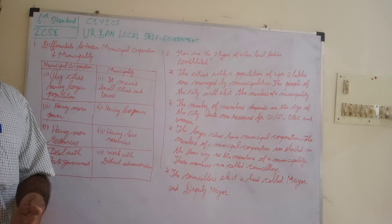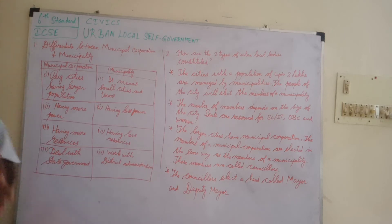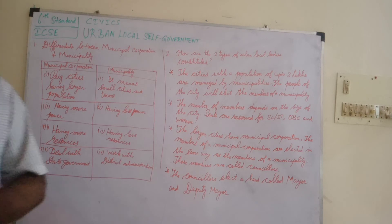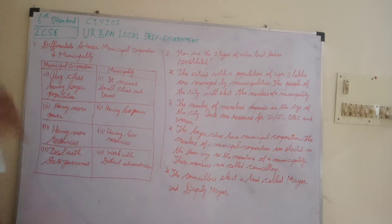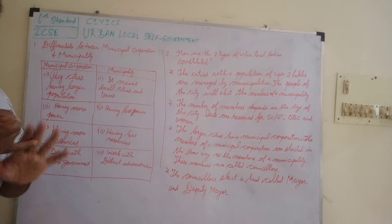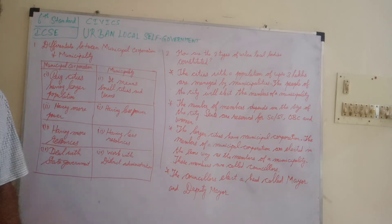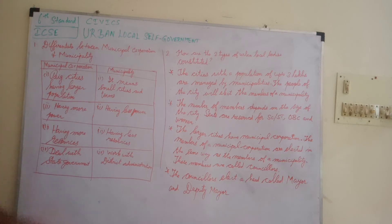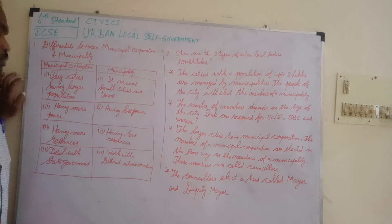These small towns like Viluppuram, Cuddalore, Virudhunagar are called municipalities because they have less number of population when compared to cities like Chennai, Salem, Erode, Thirupur, Thanjavur, Nellai, and Trichy. That is the difference between municipal corporation and municipality in terms of examples.